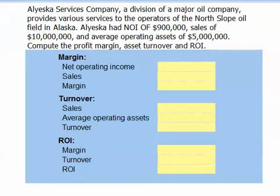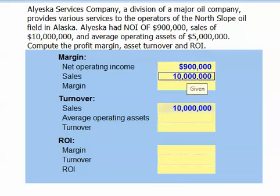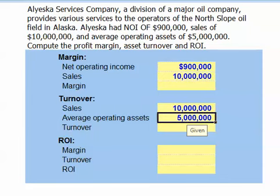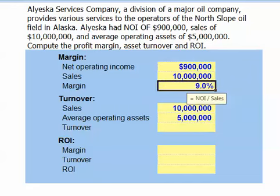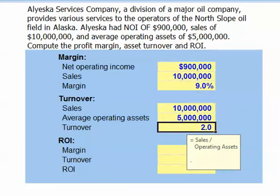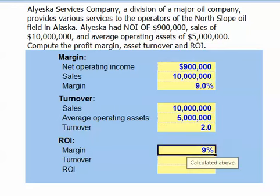Alaska Services Company, a division of a major oil company, provides various services to the operators of the North Slope Oilfield in Alaska. Alaska had net operating income of $900,000, sales of $10,000,000, and average operating assets of $5,000,000. Our profit margin is $900,000 divided by $10,000,000 in sales, or 9%. Our asset turnover is $10,000,000 in sales divided by $5,000,000 in average operating assets, or 2. Our ROI is profit margin of 9% multiplied by asset turnover of 2, giving an ROI of 18%.